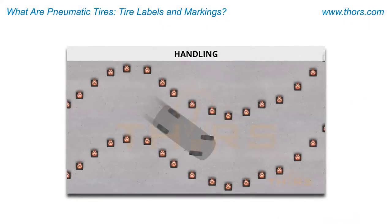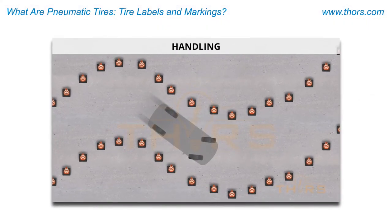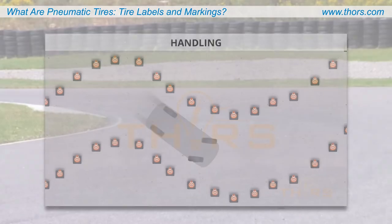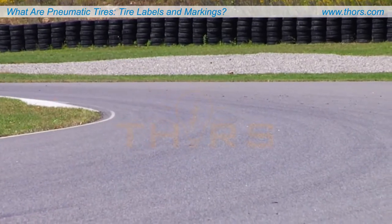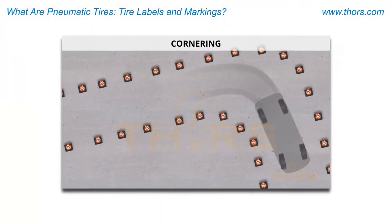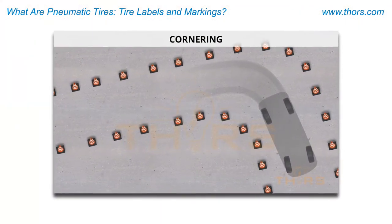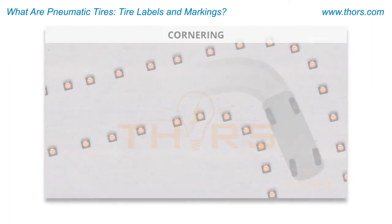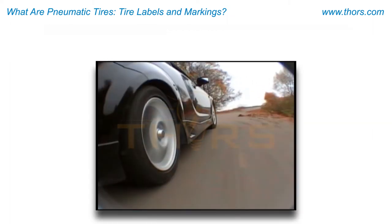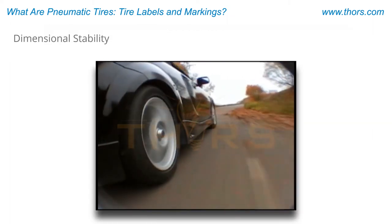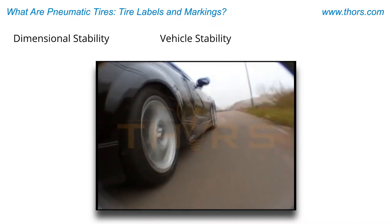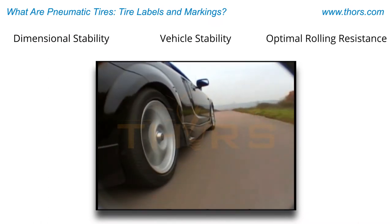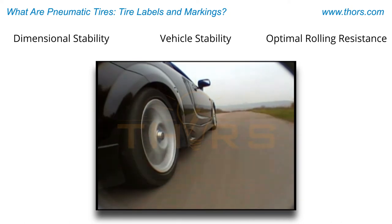Controlled steering and handling response at operating speeds, such as when changing lanes and quartering, are also required. In addition, tires provide dimensional stability, vehicle stability, and optimal rolling resistance to achieve the desired fuel economy.